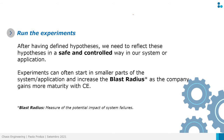Experiments can often start in smaller parts of the system and increase the rate — the blast radius — as the company gains more maturity with Chaos Engineering. The blast radius is the measure of the potential impact of system failures. We need to start experiments with small impact potentials, and over time, as we gain more maturity, we can increase the impact area of our application.